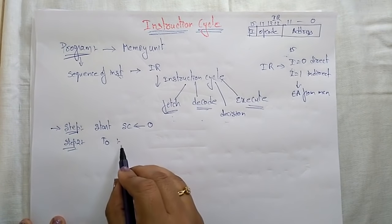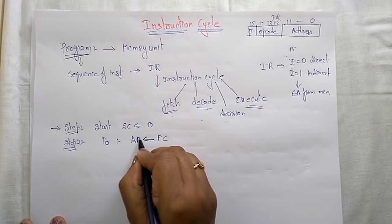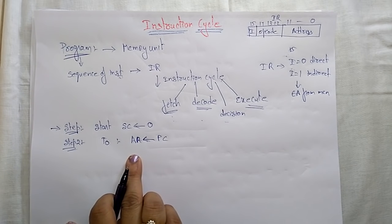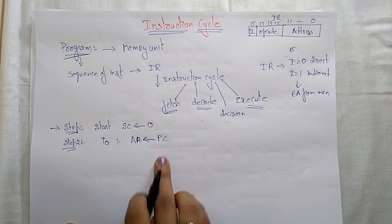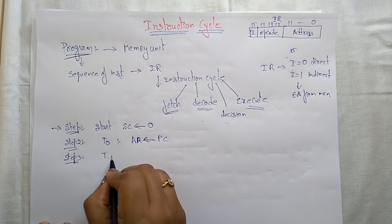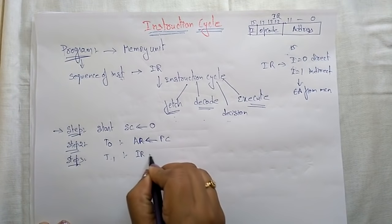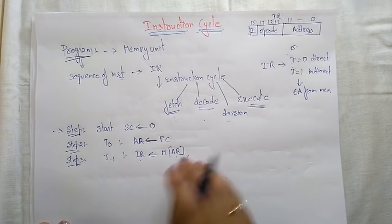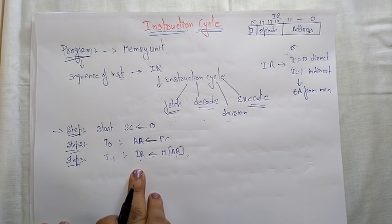During timing sequence T0, the program counter will be placed in the address register. Whatever address is present in the program counter will be placed in the address register. The program counter holds the address of the next instruction to be executed. Then during T1 timing signal, the content of memory at the address register will be placed in the instruction register.